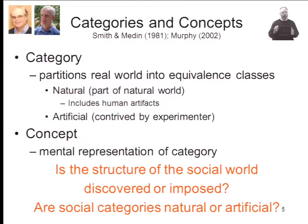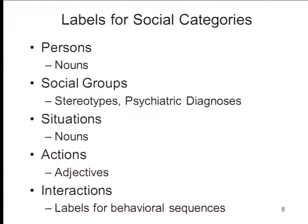We've got natural categories that exist independently of the observer, and artificial categories that are products of individual minds. One of the questions we want to ask is whether the categories we encounter in the social world are natural categories that exist independently of the mind and are discovered by it — or whether they are a product of human intelligence, not just discovered by the mind but actually created by it. Put another way: are social categories natural or artificial? As you'll see, this is not always an easy question to answer.